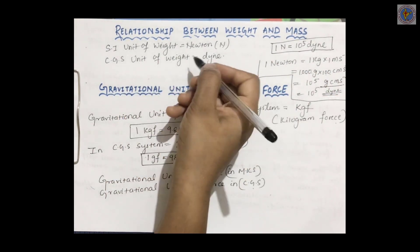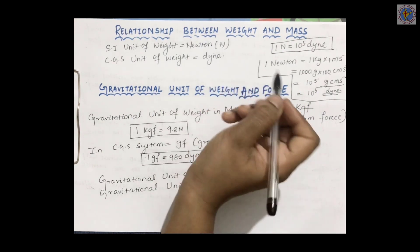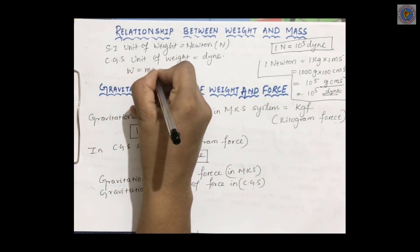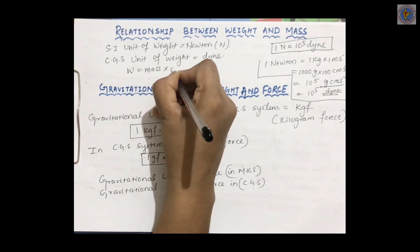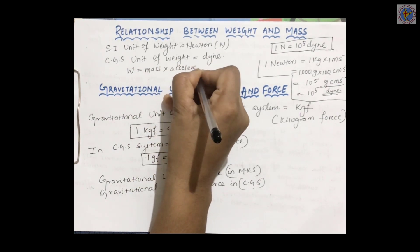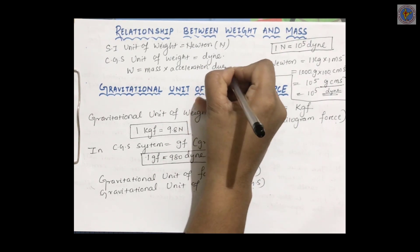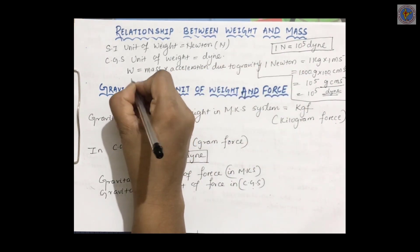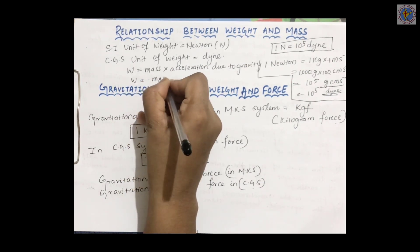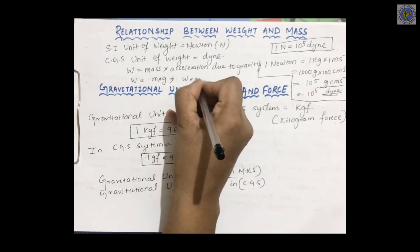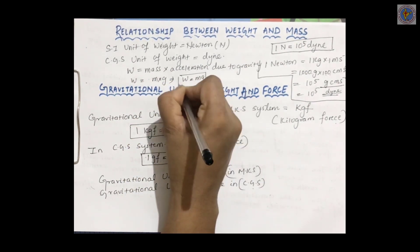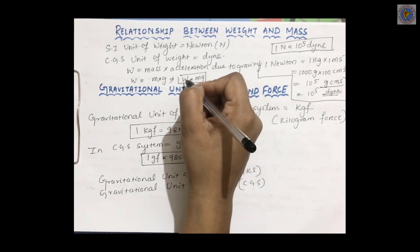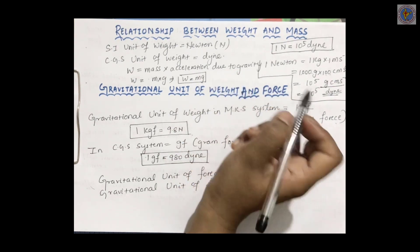Now, what is the relationship between weight and mass? Weight is nothing but equal to mass into acceleration due to gravity. We can write W is equal to M into G, or W = MG. Since the value of G varies from place to place, the weight of a body will also vary from place to place.